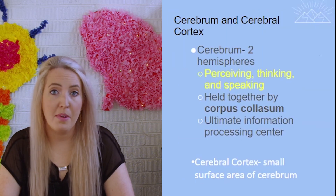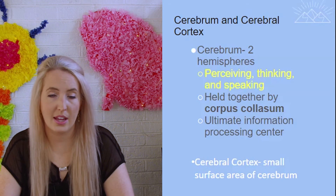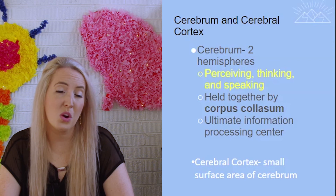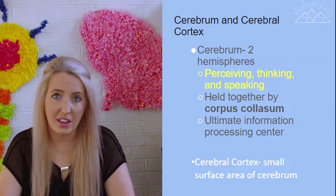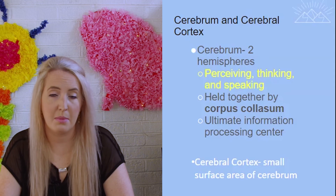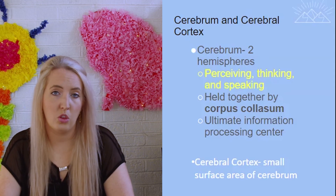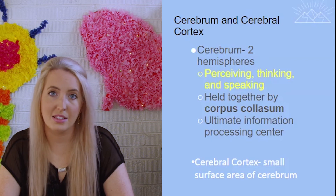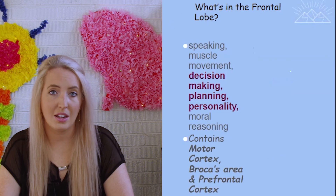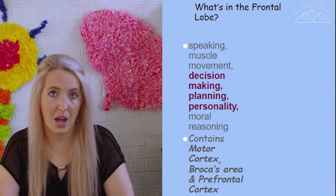As we move up to the top of our brain, this is known as the cerebral cortex, which is the last thing to develop. This is where all of our higher-level thinking, processing, and the majority of our brain functions take place. The cerebral cortex is made up of four lobes — you can think of them as FPOT: the frontal, parietal, occipital, and temporal.